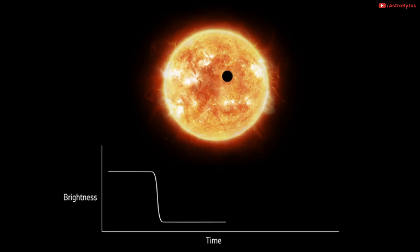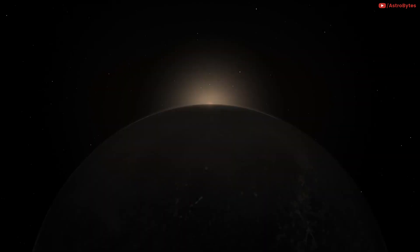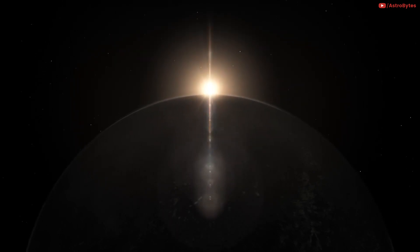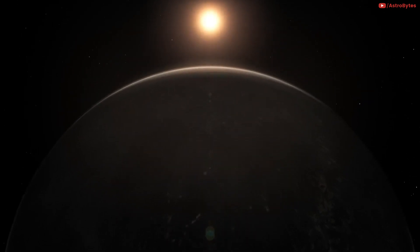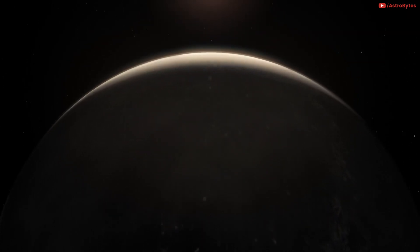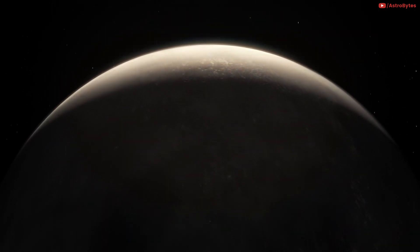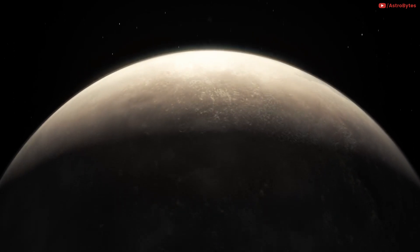By studying the time between transits, astronomers can also find out how far away the planet is from its star. This tells us something about the planet's temperature. If a planet is just the right temperature, it could contain liquid water which is an important ingredient for life.